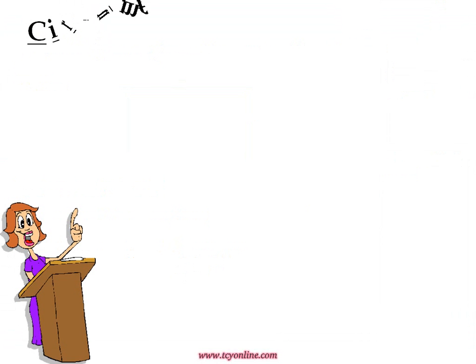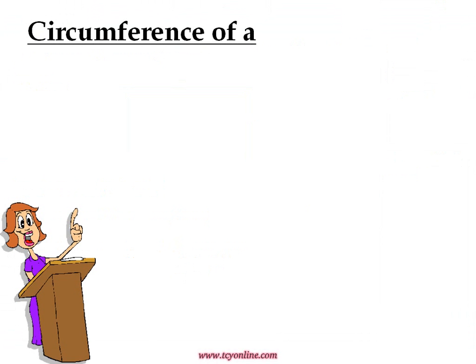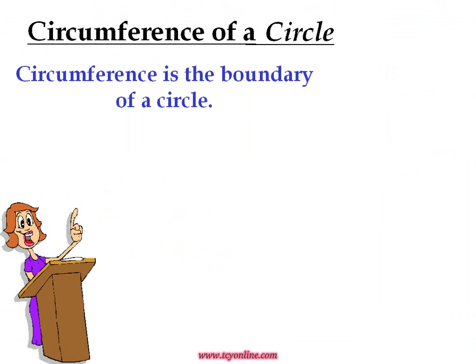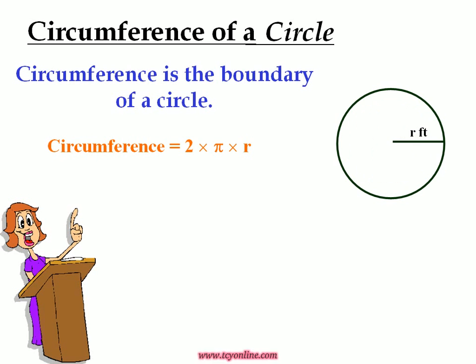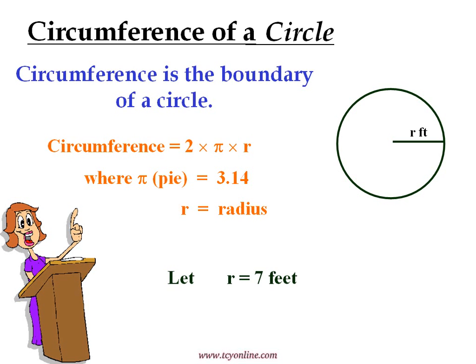We shall now see how to calculate the circumference of a circle. Circumference is a boundary or distance around a circle — it is a kind of perimeter. If the radius of a circle is R, then circumference is equal to two times pi times R, or 2πR, where pi is equal to 3.14 approximately and R is the radius of the circle. For example, if the radius of the circle is equal to 7 feet, then circumference will be equal to two times 3.14 times 7, which is equal to 43.96 feet.